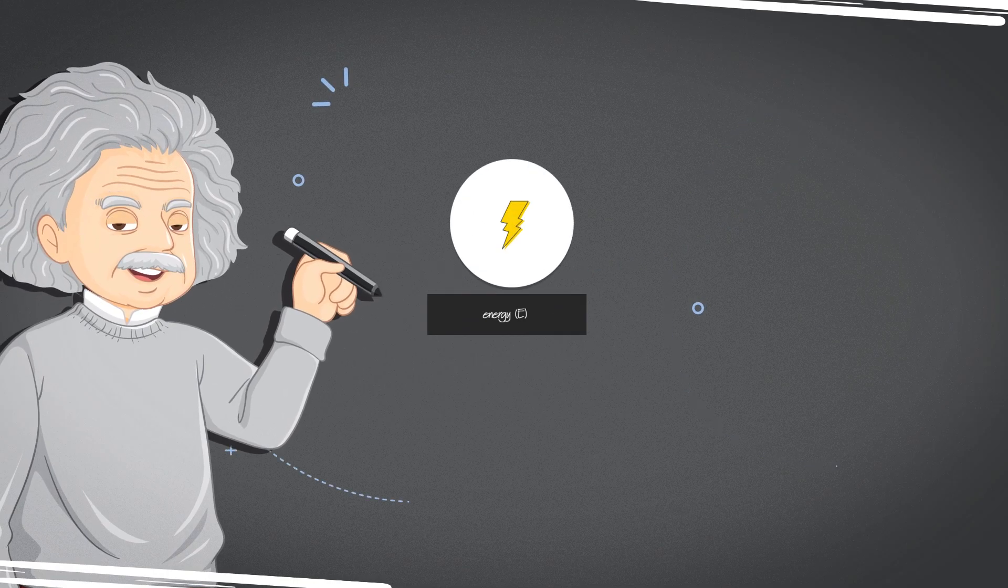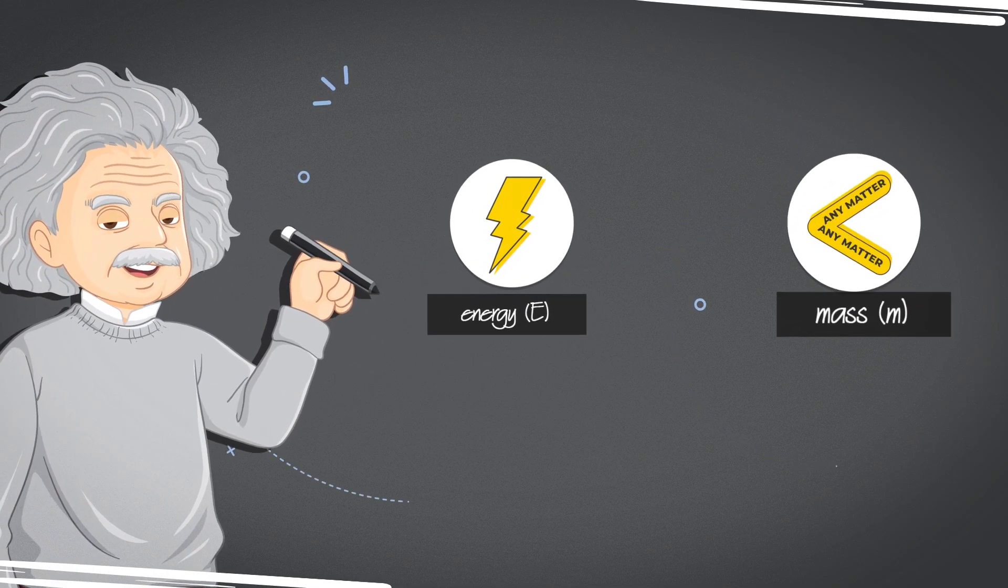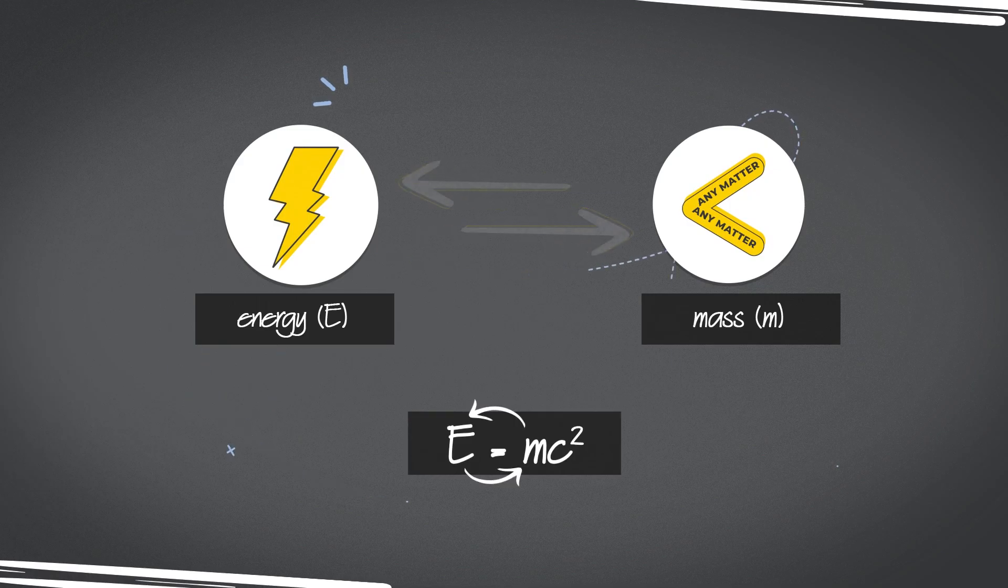It shows that energy, E, and mass, m, are interchangeable. They are different forms of the same thing.